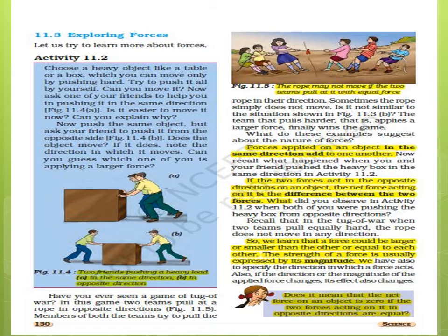Here we can see that the block is pushed by two boys but in opposite directions, so the net force or total force will be the difference of the two forces. Suppose one force is 50 and the other is 30, then the net force will be 50 minus 30, which is 20. If the forces are in the same direction — 50 and 30 — the net force will be 50 plus 30, which is 80.